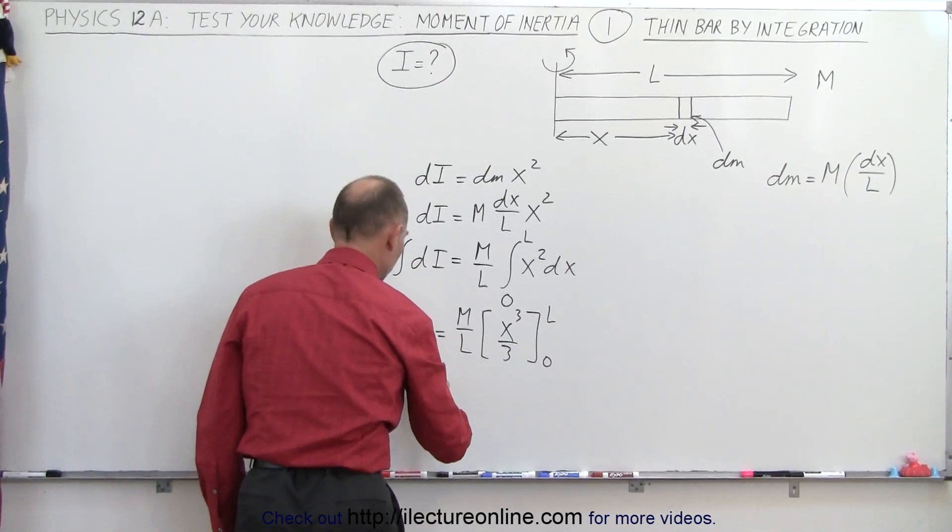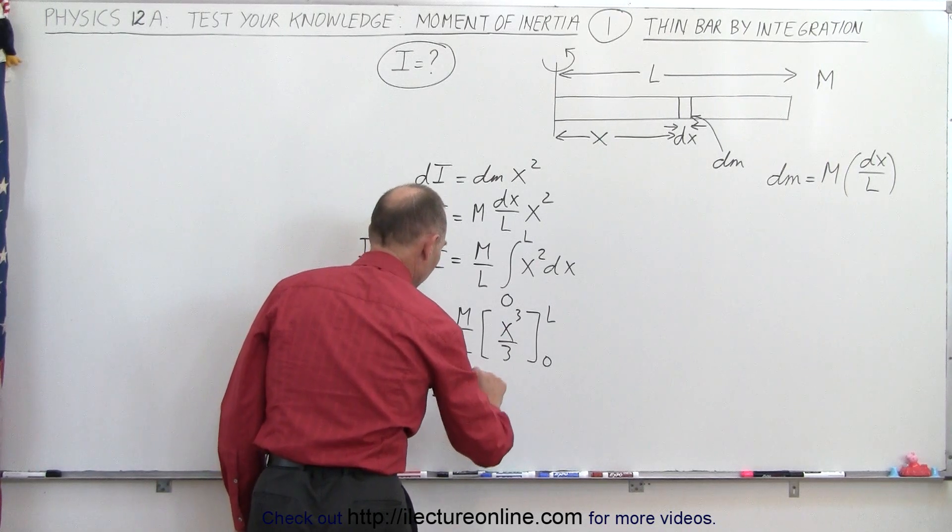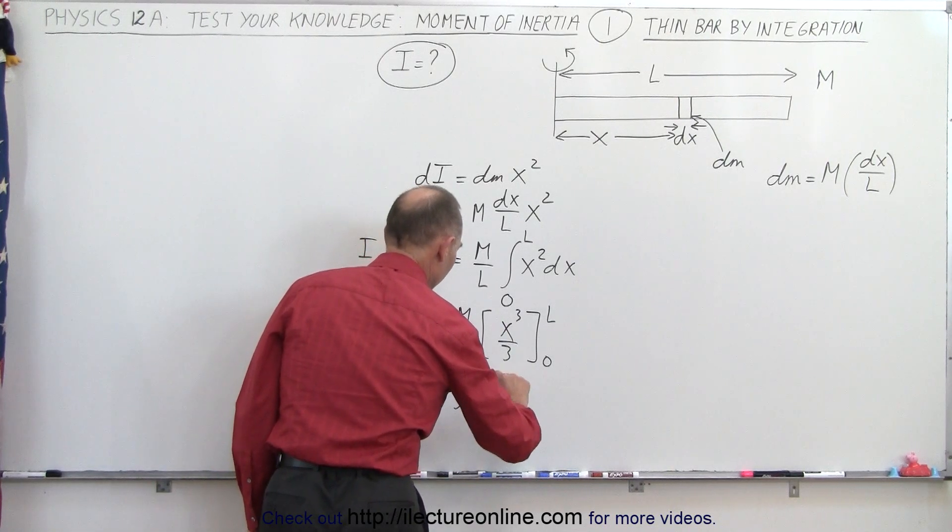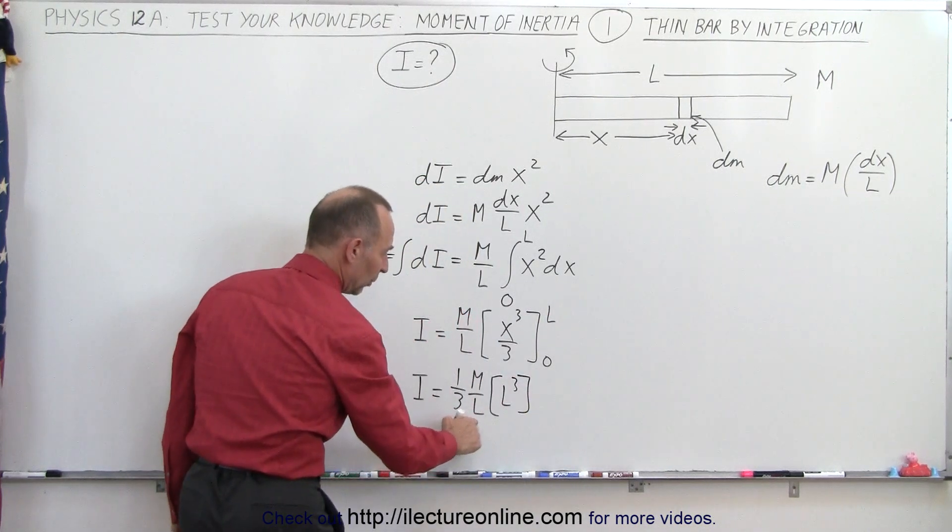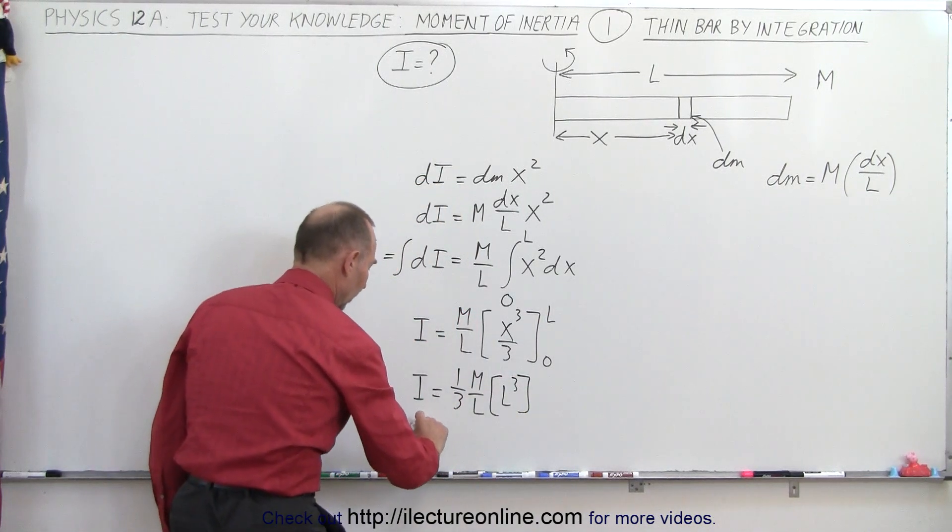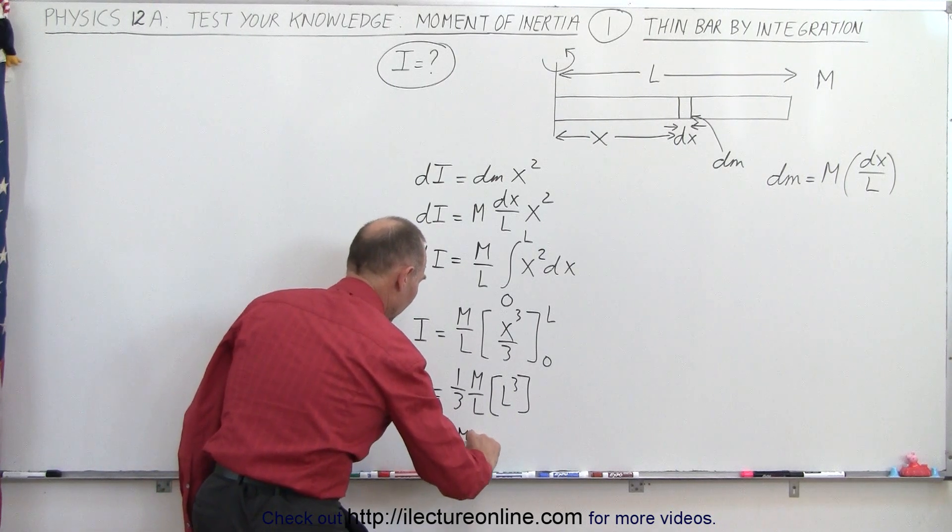So we say that the moment of inertia is equal to one-third M over L times, plug in the upper limit, we get L cubed. Of course this L will cancel out one of those L's, so we have moment of inertia therefore is equal to one-third M L squared.